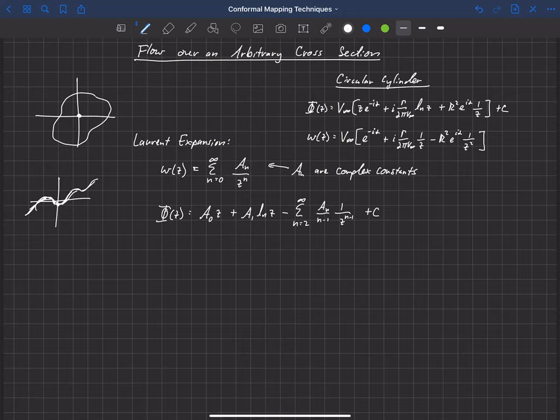So now we have this Laurent series expansion. We can have as many terms as we want in there. But let's go back and look at what this looked like for the circular cylinder. So for the circular cylinder, we can take either phi or w, and look at the terms inside of that. So let's just look at phi here for a minute.